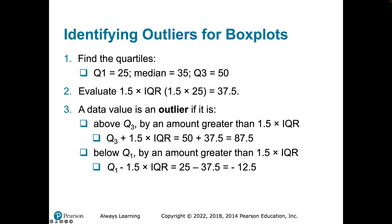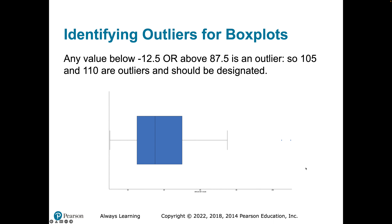For the lower fence, take Q1 minus 1.5 times the IQR: 25 minus 37.5 equals negative 12.5. If we have a value below negative 12.5, it is an outlier. In our situation, no wait time can be negative, so there are no lower outliers. But we do see two values — 105 and 110 — which are above 87.5. These values are denoted by points on the box plot, not connected to the main frame, because that's how we display outliers for quantitative variables when using box plots.